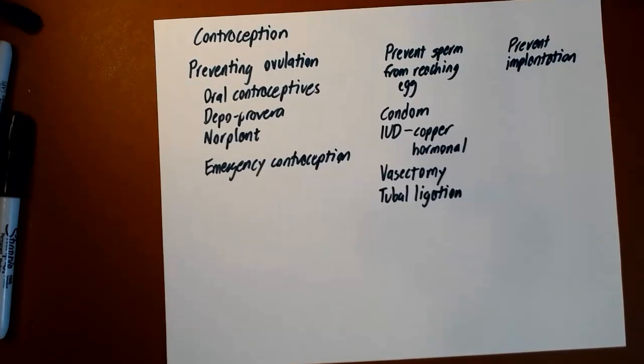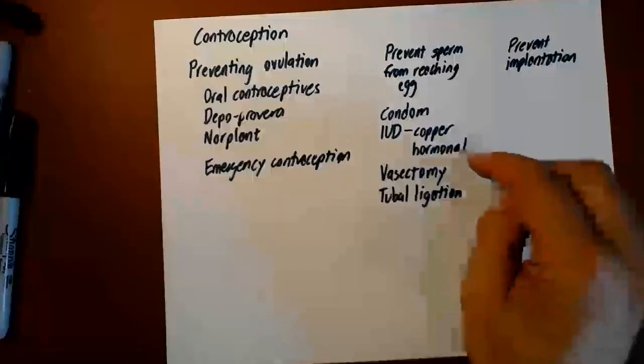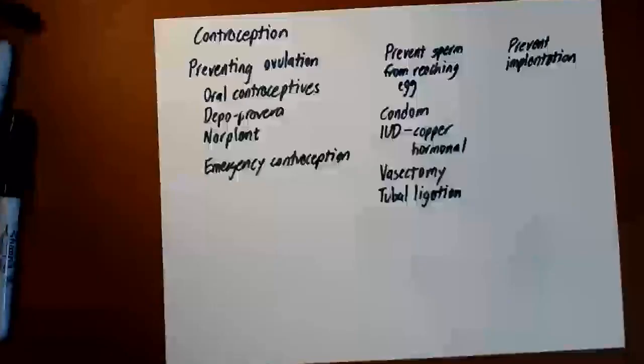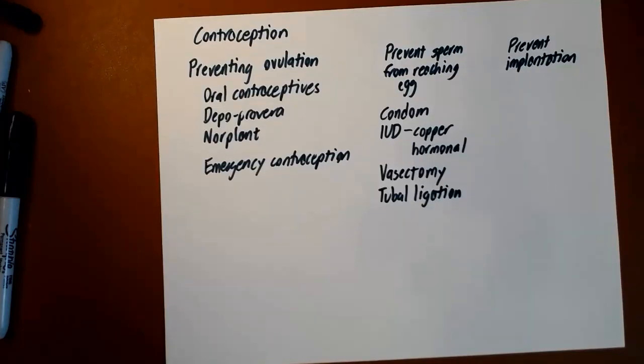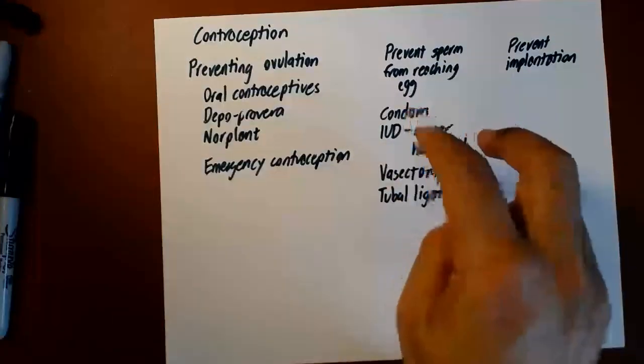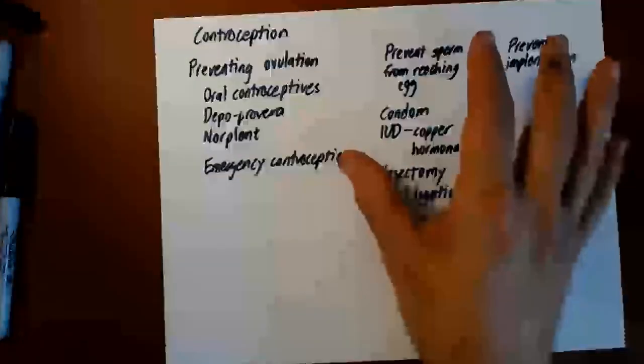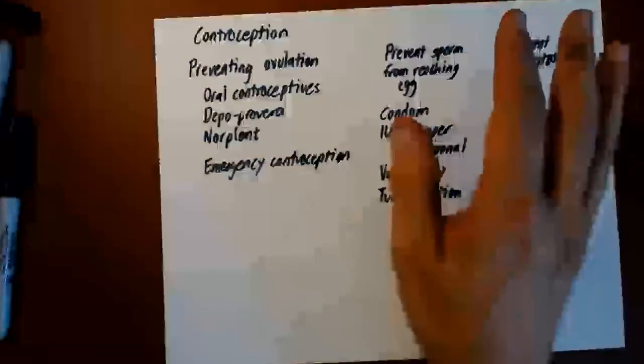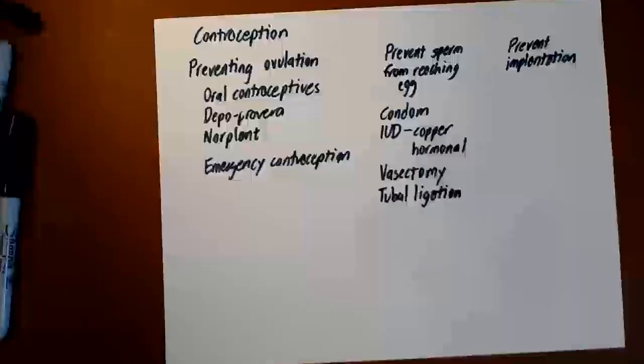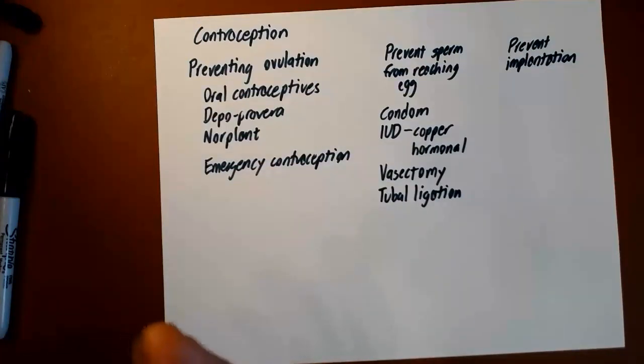This last category of preventing implantation, there's some controversy over that. There is some evidence that hormonal IUDs and possibly even oral contraceptives can alter the uterine lining such that it does not allow implantation. The evidence on that is weak. And the last reports I read were that even if that is a possibility, that is certainly not the primary way by which these things work. Hormonal IUDs primarily work by preventing sperm from getting to the egg by thickening the mucus and making it a sperm hostile environment. And oral contraceptives primarily work by preventing ovulation, also by thickening the cervical mucus. There is pretty good evidence that they do not have a strong effect on preventing implantation. But it is theoretically possible that that is not their method of acting. And that is the end of the reproductive system.